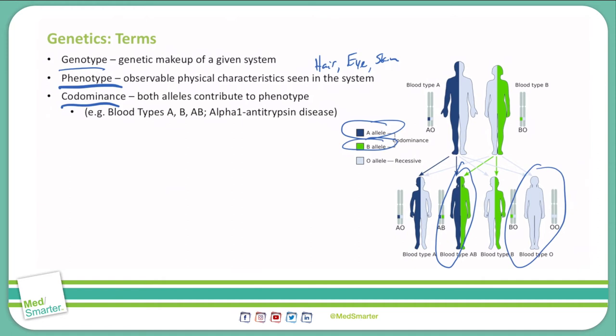Also along those lines, another codominant trait is alpha-1 antitrypsin disease, which is a lung and/or liver disease. We'll talk about that at another point in time.